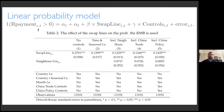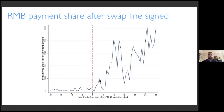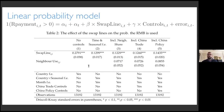Here is the regression: a linear probability model with fixed effects and all the controls listed. The swap line dummy switches on when you sign the swap line. The coefficient of 0.28 — or 13% after all controls — gives a very solid and stable impact: signing a swap line raises by 13 percentage points the probability that you go from not using RMB at all in payments sent and received to observing RMB payment activity. The result doesn't change much across specifications.